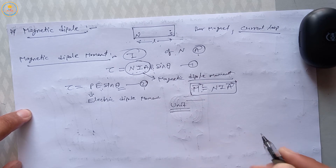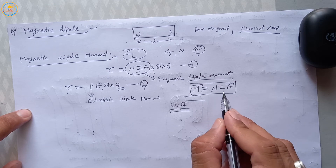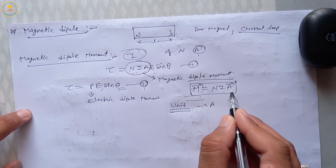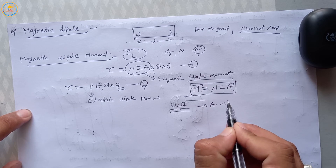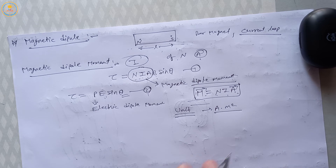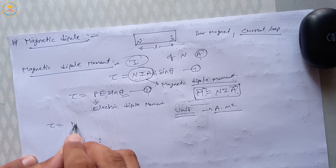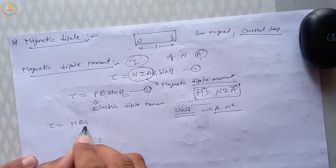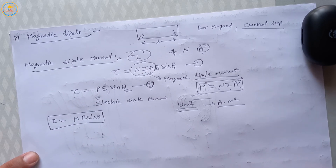The unit of magnetic dipole moment M: N is unitless, I is in amperes, and A is in meter squared. So the unit of M is ampere·meter². Substituting M into the torque equation, τ equals MB sinθ.